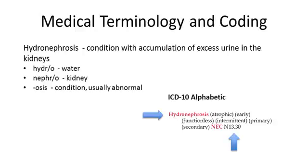When you put them together, you have a full explanation of the diagnosis hydronephrosis, which is a condition with an accumulation of excess urine in the kidneys. Now you can find the medical term in the Alphabetic Index of the ICD-10 code book and identify the correct code that will be assigned.